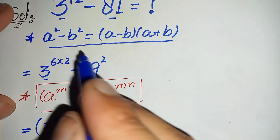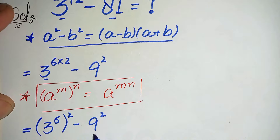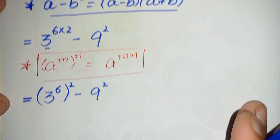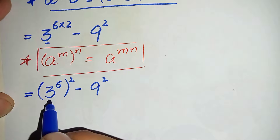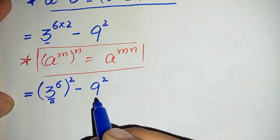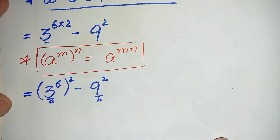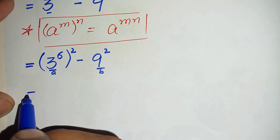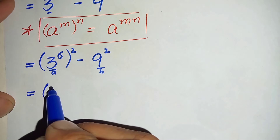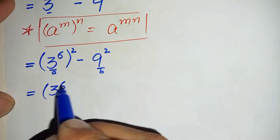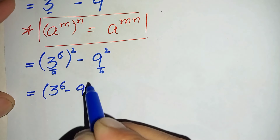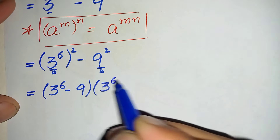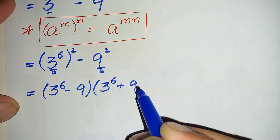Now this is in the form a squared minus b squared, where a is 3 raised to power 6 and b is 9. So by using this identity it will become: 3 raised to power 6 minus 9, times 3 raised to power 6 plus 9.